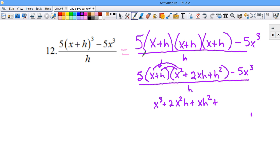h times x squared is x squared h plus 2xh squared plus h cubed minus 5x cubed. And this is all by 5 over h.